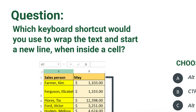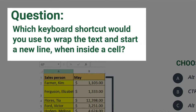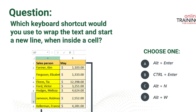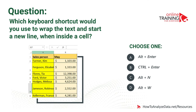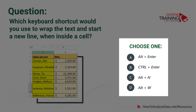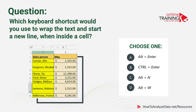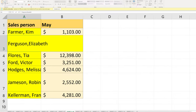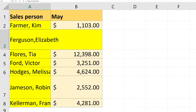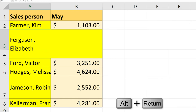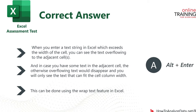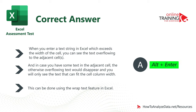Which keyboard shortcut would you use to wrap the text and start a new line when inside the cell? Four choices are presented: Alt plus Enter, Ctrl plus Enter, Alt plus N, and Alt plus W. When you are inside the cell and need to continue text on a new line, you use the Alt+Enter shortcut. The correct answer is choice A, Alt plus Enter.